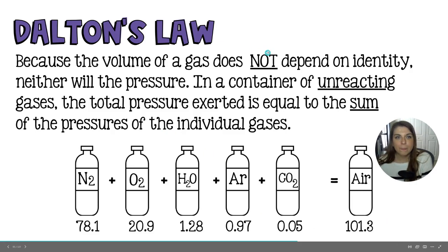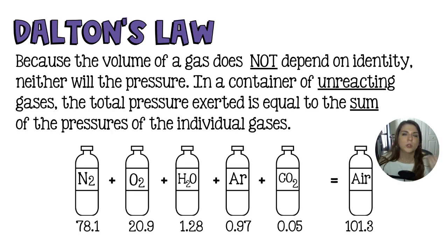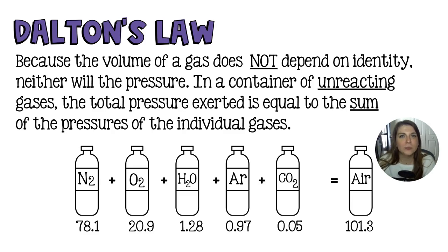Dalton's Law of Partial Pressures becomes more important when using specific gas laws rather than the combined gas law. If you have nitrogen and oxygen at individual pressures, you can add them together to get the pressure of the mixture, then plug that total pressure into a combined gas law equation. For high school chemistry, it's fairly straightforward. That's really all for this lesson — any practice is just algebra.